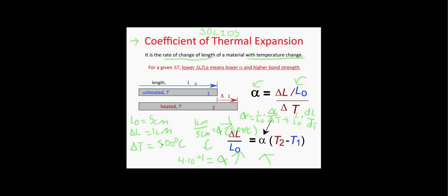That's basically the extent of the math that most intro materials classes will require — no calculus. What's important to note is that for a given change in temperature, a lower value of change in length divided by original length means a lower alpha and higher bond strength. For example, if material one has alpha of 0.1 and material two has alpha of 0.0002, we can say that material one has a lower bond strength than material two, because it expands more when heated.